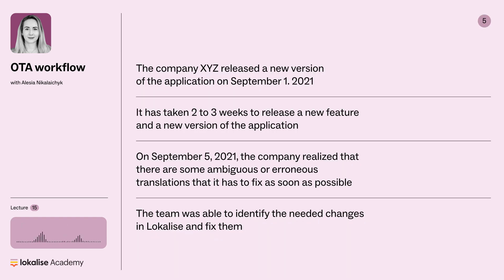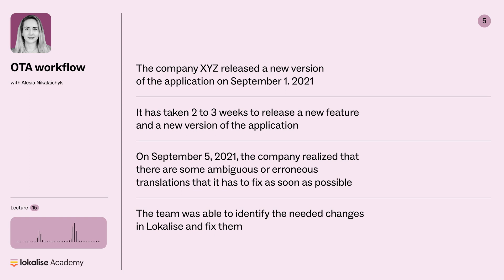Here is a simple example. Company XYZ released a new version of their application on September 1st, 2021, and it had taken presumably two to three weeks for the team to release that new feature and version. On September 5th, 2021, the company realized there were some ambiguous or erroneous translations that needed to be fixed as soon as possible. The team was able to identify the needed changes in Localized and fix them.